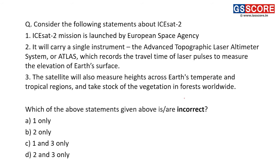Next question: consider the following statements about ISAT-2, a spacecraft. Statement one: the ISAT-2 mission is launched by the European Space Agency. This statement is incorrect — it is by NASA, not the European Space Agency. First statement is incorrect; you are supposed to find incorrect statements only. Statement two: it will carry a single instrument, the Advanced Topographic Laser Altimeter System or ATLAS, which records the travel time of laser pulses to measure the elevation of Earth's surface. This is a correct statement — ISAT-2 carries ATLAS, which measures the elevation of ice sheets based on travel time of pulsed laser radiation. Second statement is correct.